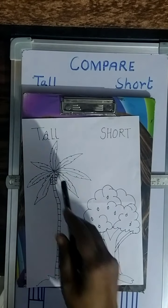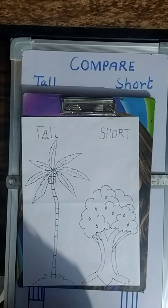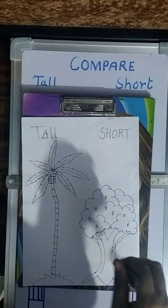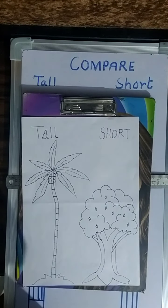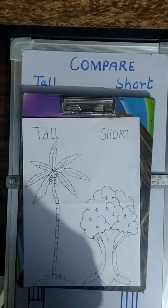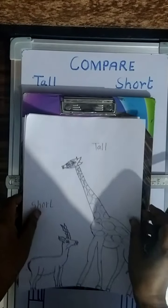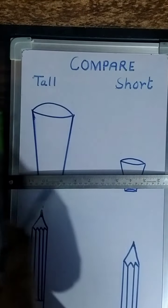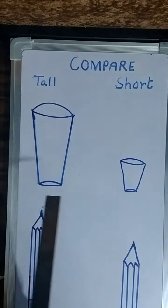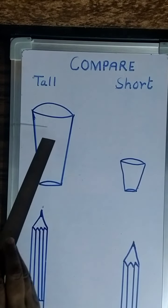Ek aur dekhte hai. Look at these pictures — this is coconut tree and this is mango tree. Which one is tall? Yes, coconut tree is tall and mango tree is short. Now look at these pictures — this is glass.